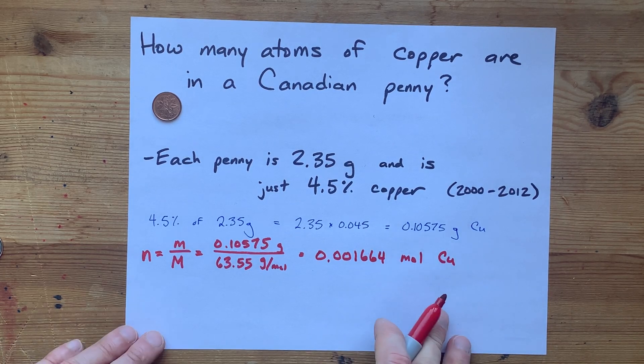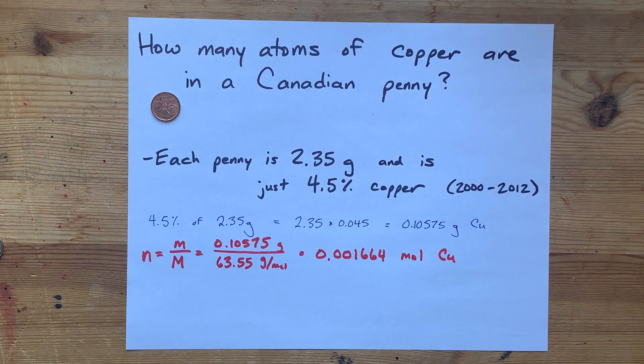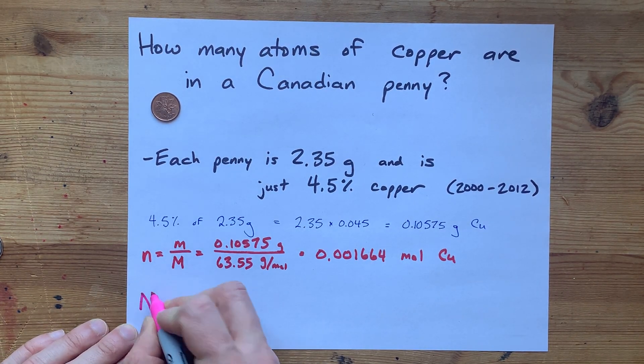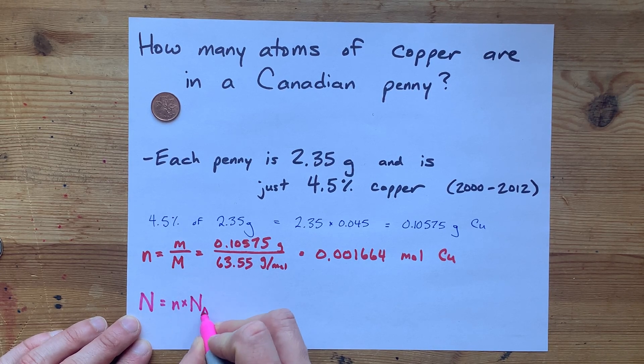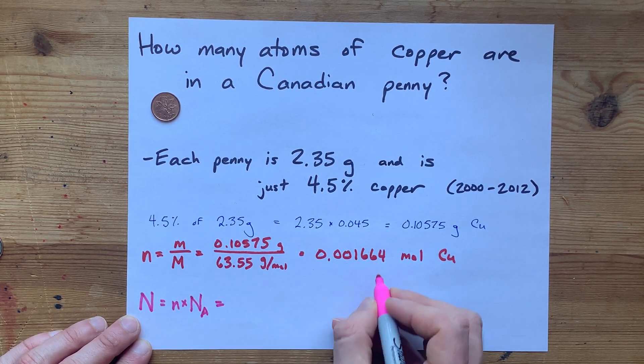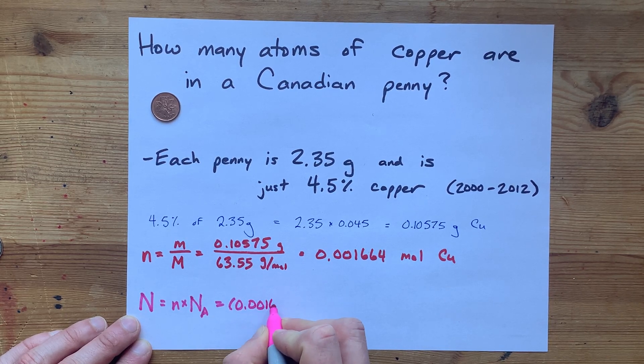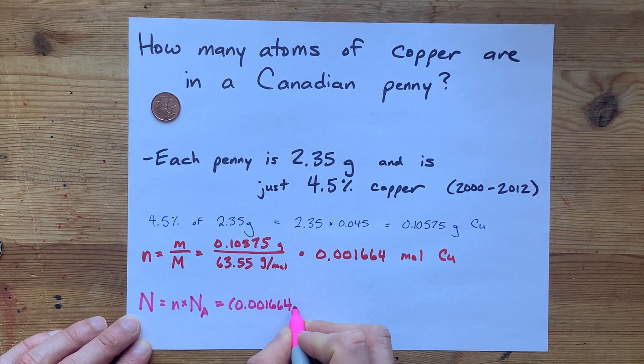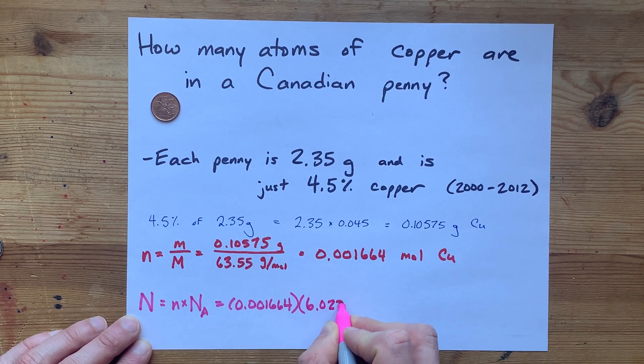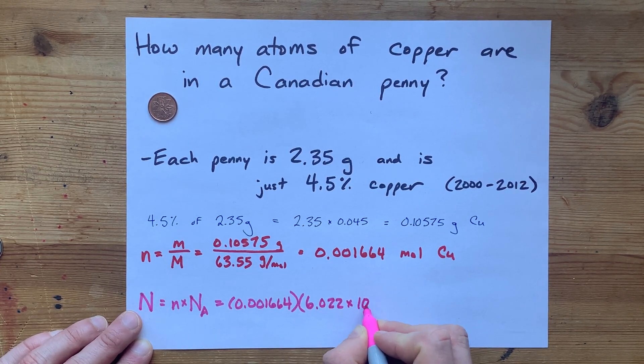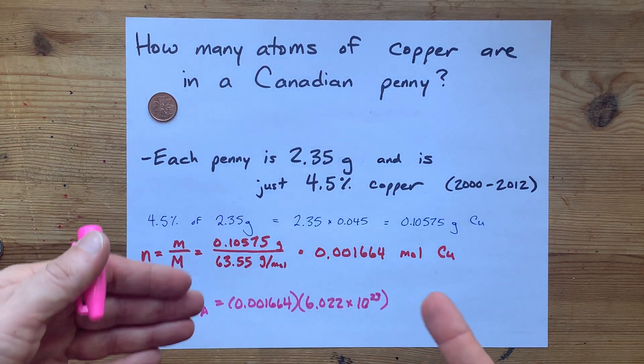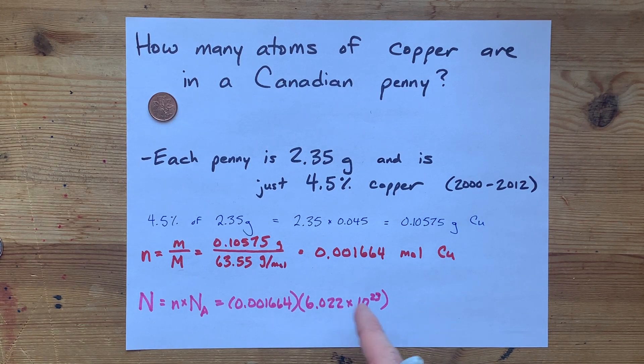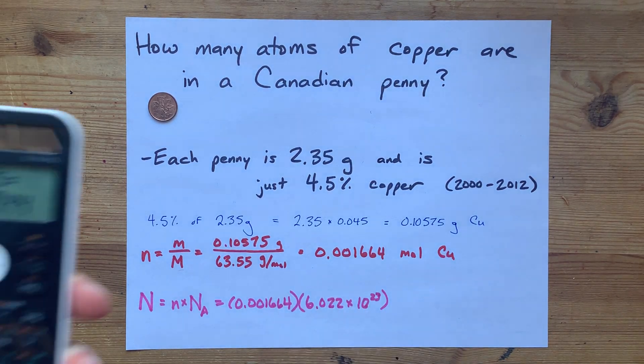Now, that is a way to measure the quantity of particles in something. In order to convert that to actual atoms, I'm going to use the other formula. Number of particles is moles times Avogadro's number. That's going to be 0.001664 times 6.022 times 10 to the power of 23. The units on this are whatever you're measuring per mole. In this case, it's atoms per mole. And the per mole cancels with the moles and it leaves you with atoms.